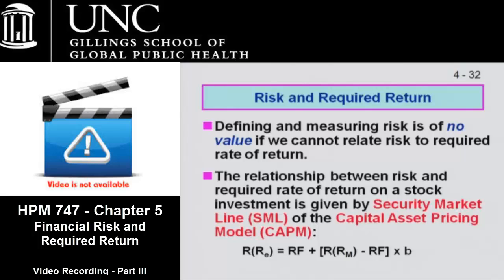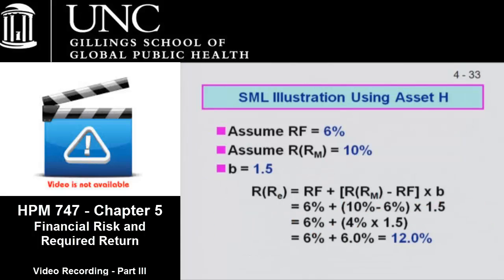We'll go through an example that makes this more intuitive. Suppose we go to the website and find that the risk-free rate right now is 6%, all the stock market analysts think the return on the market is going to be 10% over the next year, and we know the beta of our organization is 1.5. We do the arithmetic — 6% risk-free rate, plus the difference between the required rate of return on the market (10) and the risk-free (6), multiplied by the beta of 1.5 — and we find the required rate of return on this stock is 12%. What do you notice about that 12% compared to the required rate of return on the market? It's higher. Why? It's riskier — its beta is greater than 1.